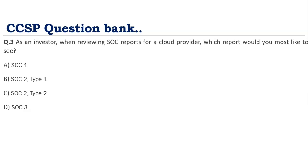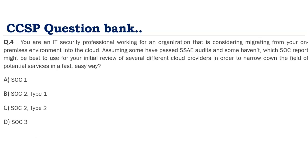Third question: as an investor reviewing SOC reports for a cloud provider, which report would you most like to see? We have seen that SOC 1 is the base report for financial reporting — so an investor would look at SOC 1. Fourth question: as a security professional considering migrating to cloud and wanting to quickly narrow down several cloud providers, which SOC report is best for a fast initial review?